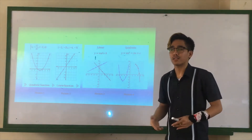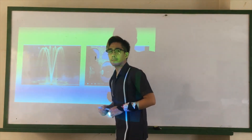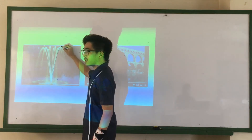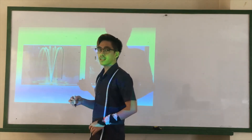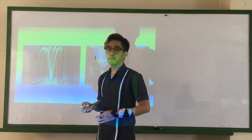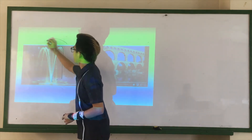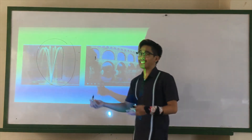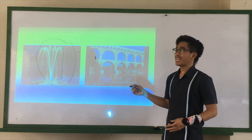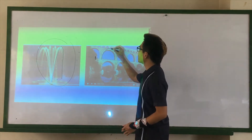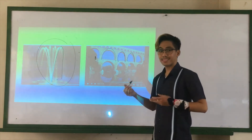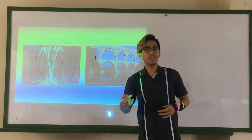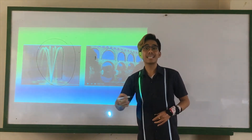We can see quadratic functions around us and appreciate this by looking at quadratic function models. Just like this fountain — the water bends as it reaches the top and falls to the ground, showing a curved line. This picture is a model of a quadratic function. Just like this bridge — it has curved lines and is also a model of a quadratic function.